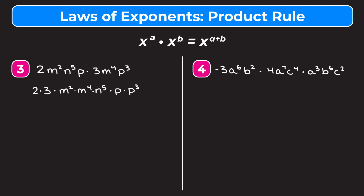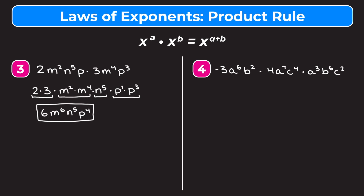Now we simplify each part. We treat numbers the way we always do: 2 times 3 is 6. For m squared times m to the fourth, we add the exponents: 2 plus 4 is 6, so we get m to the sixth. n to the fifth is by itself with no other n variables, so we keep it as n to the fifth. For p times p to the third, we change p to p to the first, and 1 plus 3 gives p to the fourth. So our answer is 6m to the sixth, n to the fifth, p to the fourth.